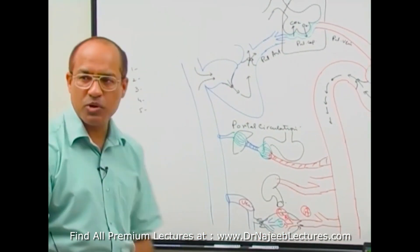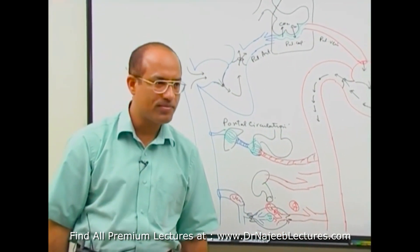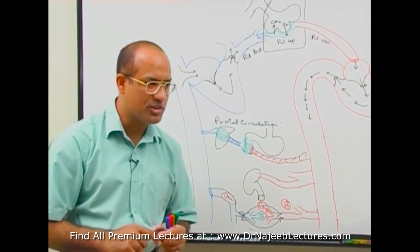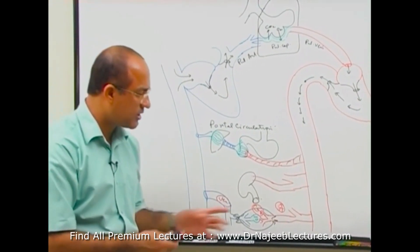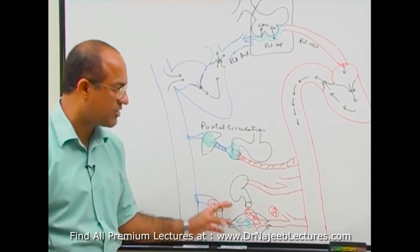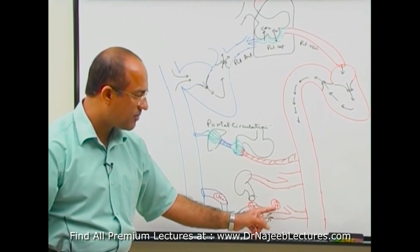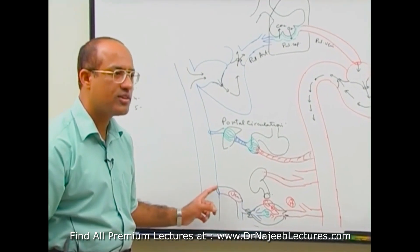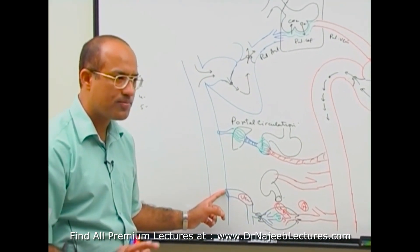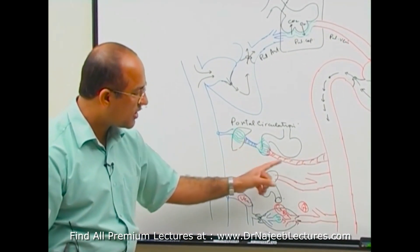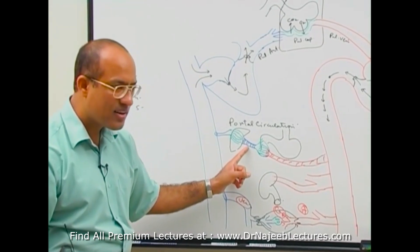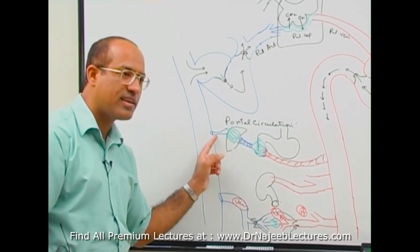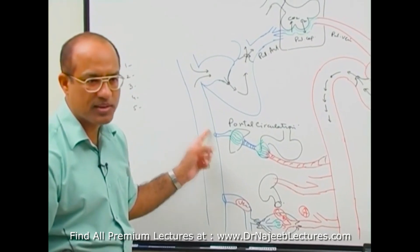Another example of portal circulation in your body — portal circulation means the circulation which is not following the simple rule. The simple rule is arterial input, capillary exchange, venous output. But here there is an unusual thing: arterial into capillary to vein, then from that vein it again breaks up into capillaries, then recollection into a vein, and then eventually a major vein.